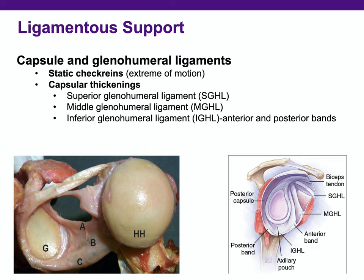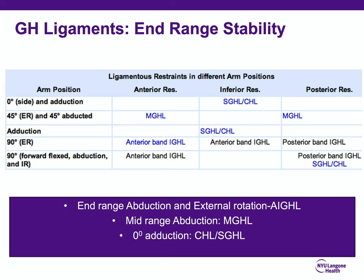We know the superior glenohumeral, the middle, and inferior glenohumeral ligament. The take-home message is that the anterior band of the IGHL is the most important ligamentous restraint for end-range abduction and external rotation. The MGHL plays a more important role in mid-range abduction, and the coracohumeral ligament and SGHL are important restraints for inferior translation at zero degrees of adduction.